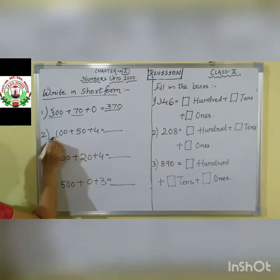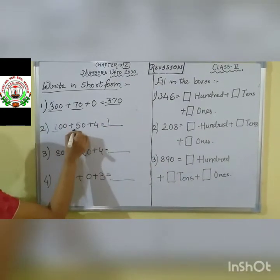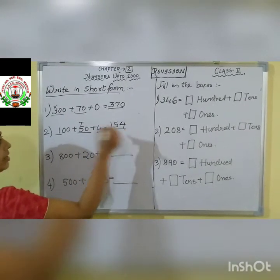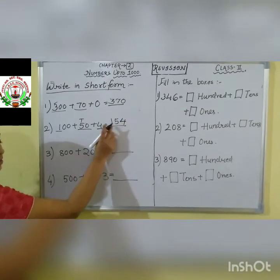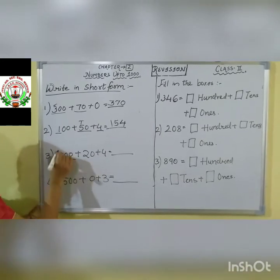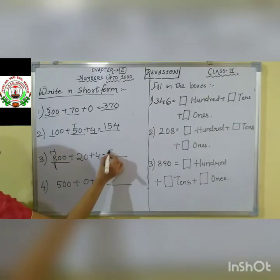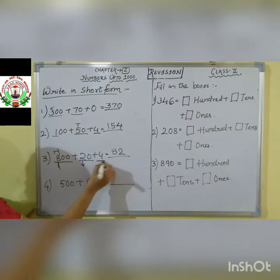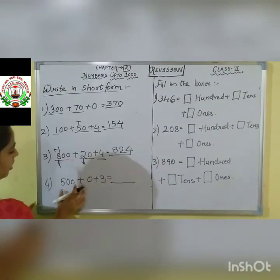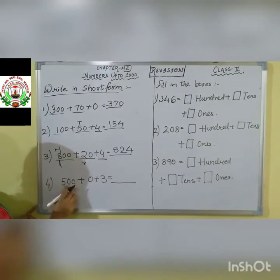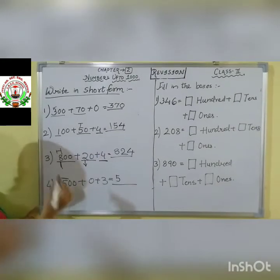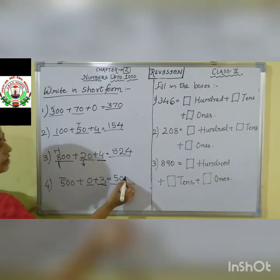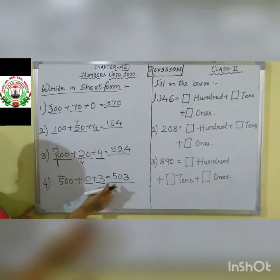Next: 100 + 50 + 4. What is the hundredths place? 1. Then 50 — what is the 10's place digit? 5. Then 4 for the ones place — write down directly 4. Together we got the answer 154. Next: 800 + 20 + 4. 100's place is 8, write down 8. Then 10's place is 2, return. Then 4. Answer: 824. Next: 500 + 0 + 3. Take 100's place: 5. 10's place: 0 is there, put 0 directly. 1's place: 3. So our answer is 503.